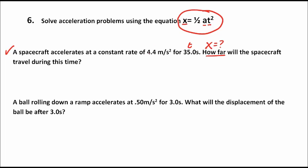We have an acceleration of 4.4 meters per second squared. We know it's acceleration because it's labeled as such and because meters per second squared is the unit used for acceleration. Now we're going to use the displacement equation: displacement equals one-half acceleration times time squared, because we're looking for displacement x. Write that equation down first.